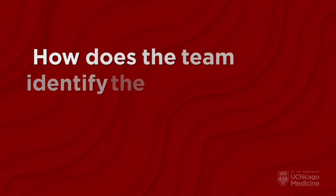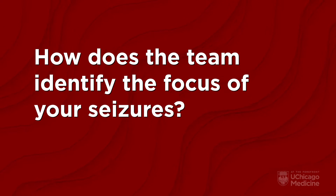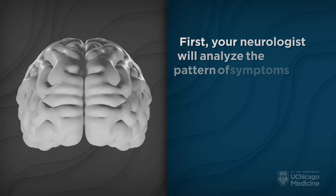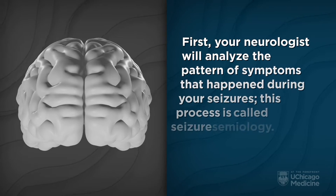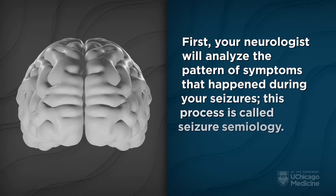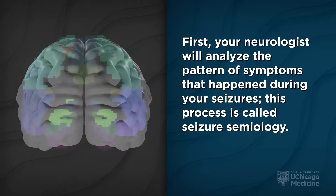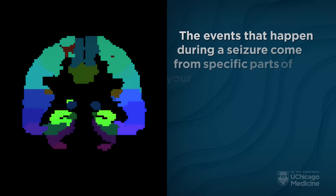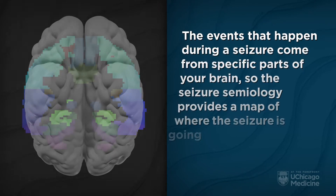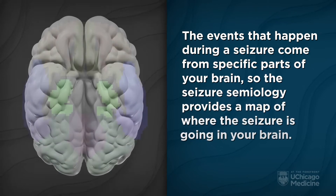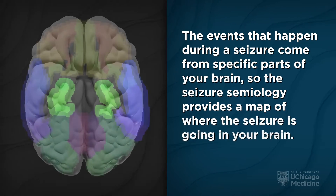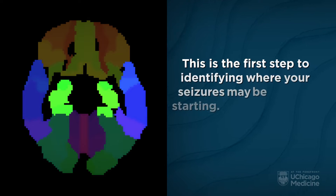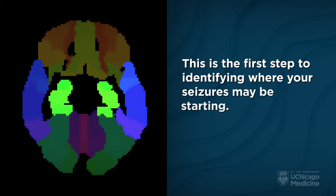How does the team identify the focus of your seizures? First, your neurologist will analyze the pattern of symptoms that happen during your seizures. This process is called seizure semiology. The events that happen during a seizure come from specific parts of your brain, so the seizure semiology provides a map of where the seizure is going in your brain. This is the first step to identifying where your seizures may be starting.